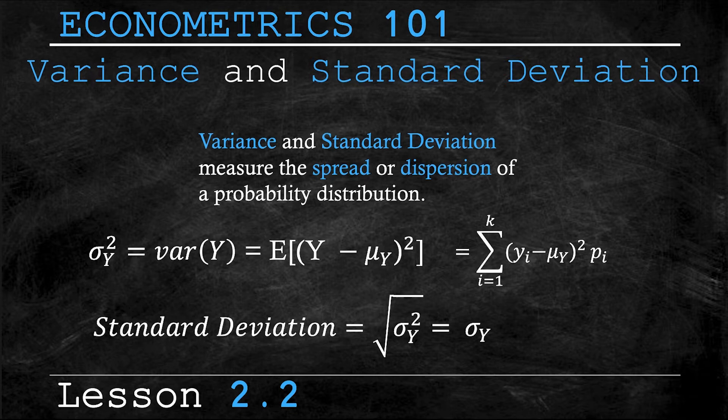So again, to get the standard deviation, you just take the square root of the variance, and if the variance is denoted as σ²(Y), well then the standard deviation is simply denoted as σ(Y).